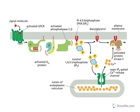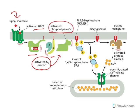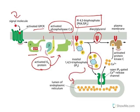The third type is Gq. Again, the signal molecule binds and activates the G-protein coupled receptor, resulting in dissociation of proteins. The activated Gq protein activates phospholipase C. Phospholipase C generates inositol triphosphate (IP3) and diacylglycerol (DAG). Inositol triphosphate acts on the endoplasmic reticulum and releases calcium. Whereas diacylglycerol, along with calcium, binds with and activates protein kinase C.